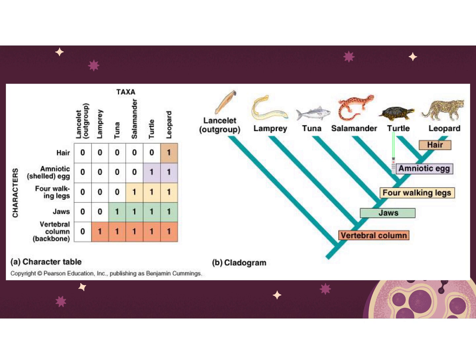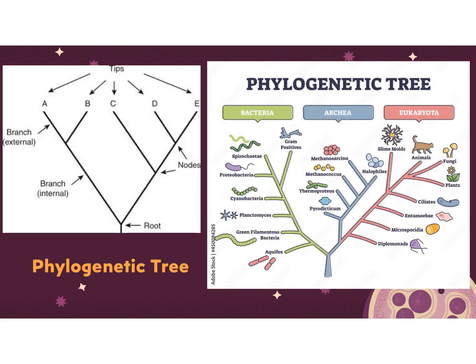In the cladogram shown, the closer two species are on it, the more closely related they are — a turtle and a leopard are more closely related than a lamprey. The divergent traits listed, like vertebral column, show that a lancelot does not have one while everyone else does; lamprey and lancelots don't have a jaw while everyone else does. In the phylogenetic tree, you look at nodes and branching for relatedness, and time is involved — some branches are very far back in time, others are more current.